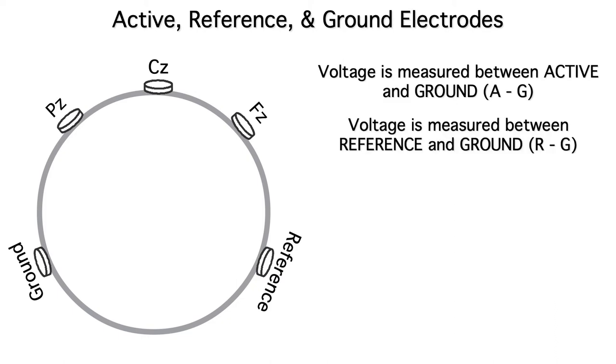We also measure the voltage between the reference electrode and ground, which is equal to R minus G. We then take the difference between the active to ground voltage and the reference to ground voltage. This gives us A minus G minus R minus G.